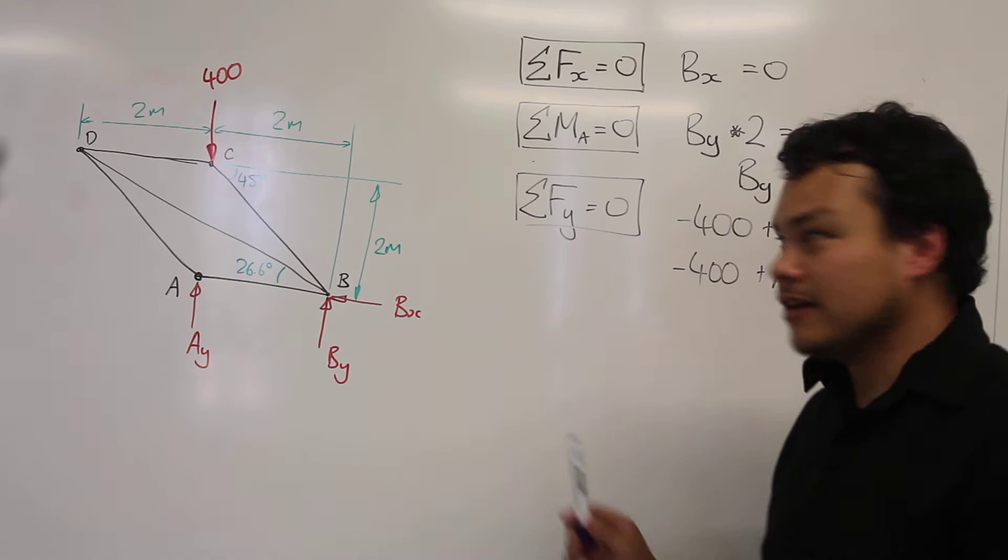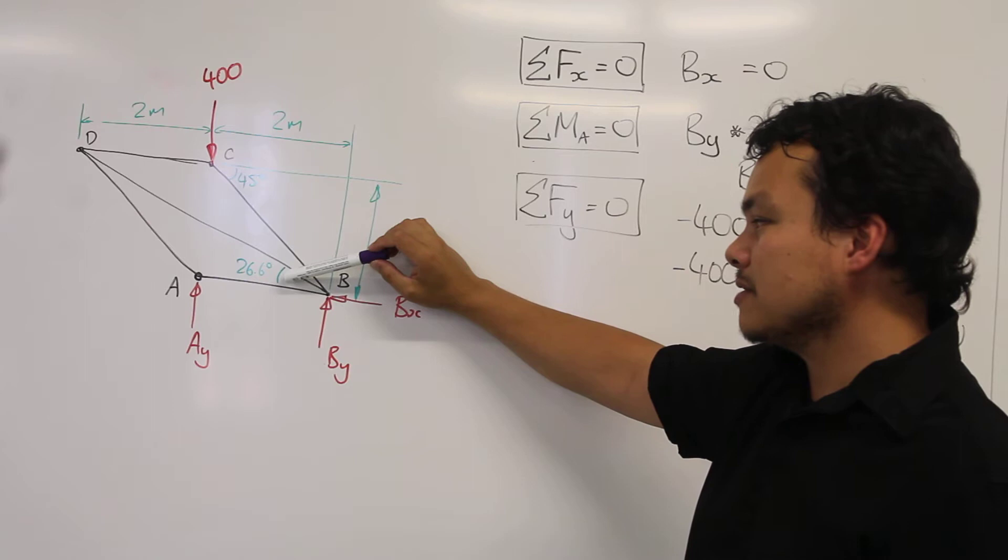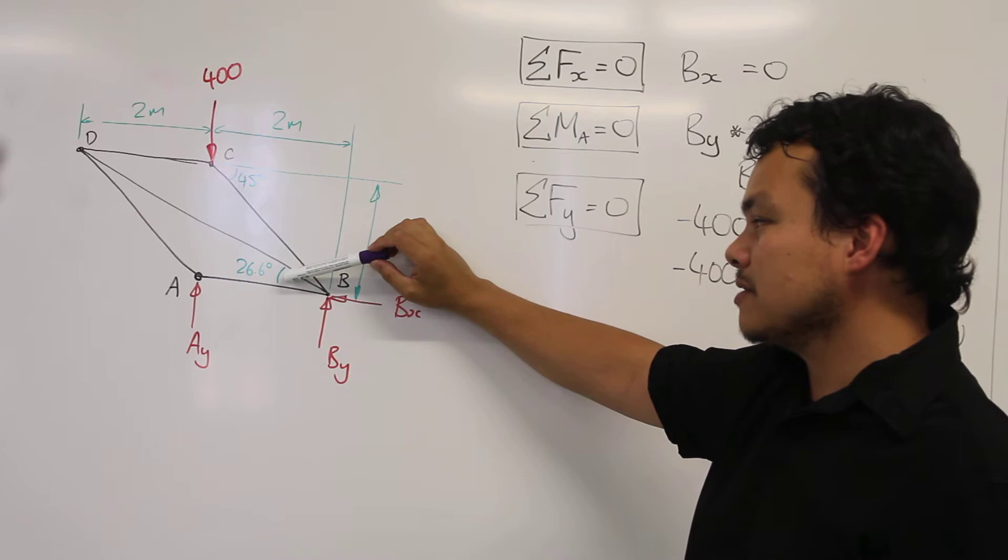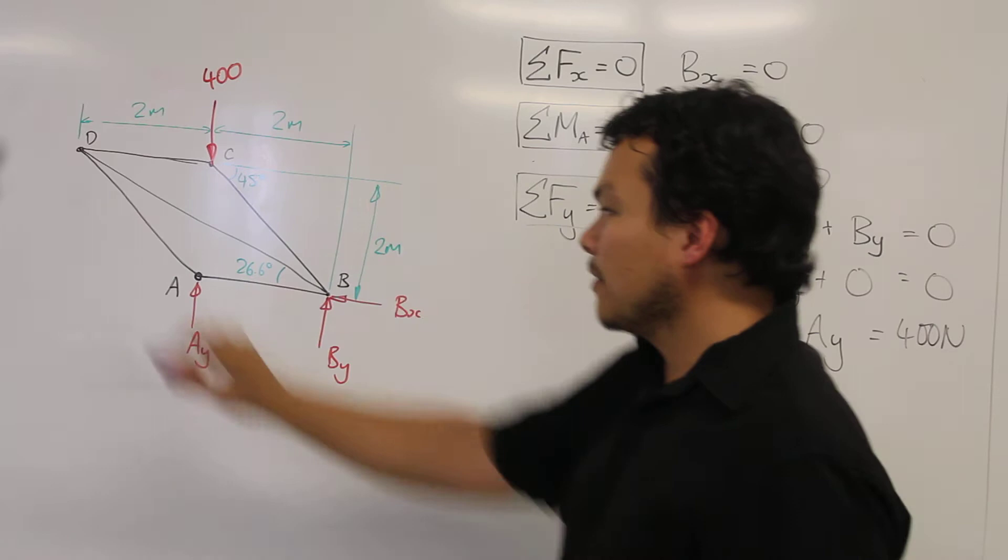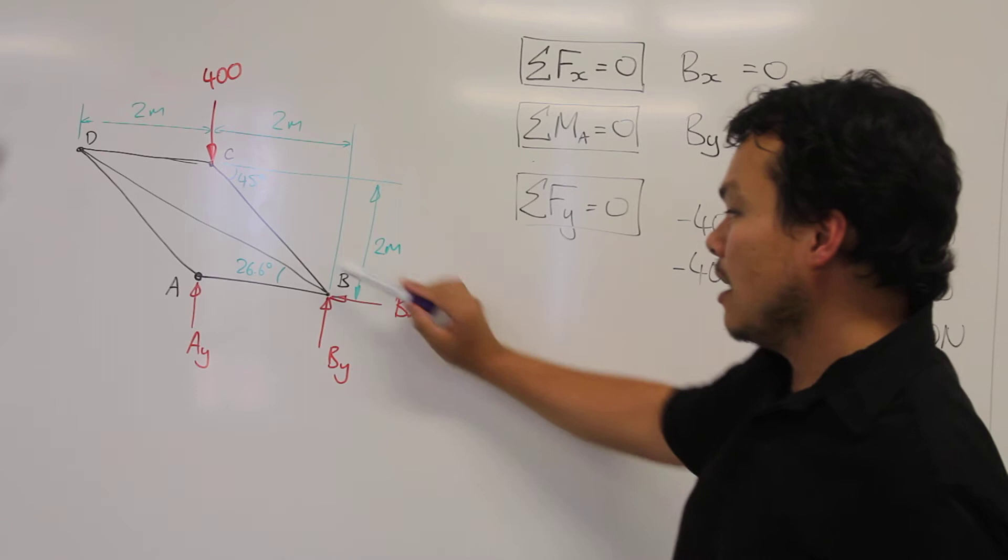So I've just picked up on an error that we have from the question itself. So from the question, there was an angle provided between A, B and D of 30 degrees. So we've now found that this angle here is incorrect. Now what follows is just the calculation of the rest of this section, realizing that this angle should be 26.6 degrees.